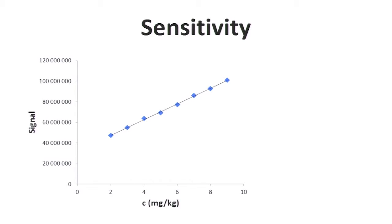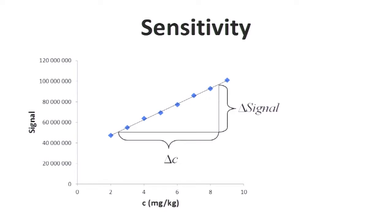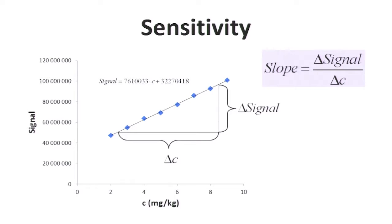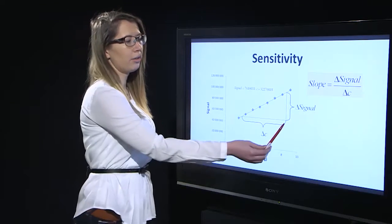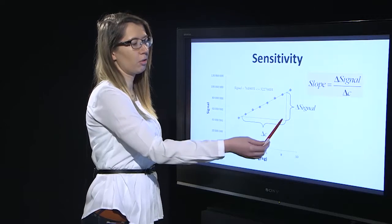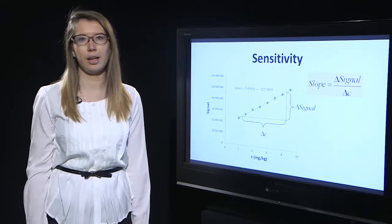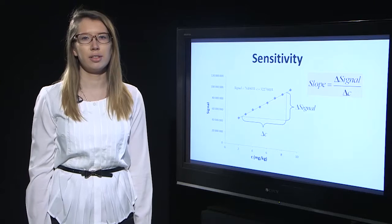On a calibration graph we can find the sensitivity according to its definition, where we find the change in the signal which corresponds to the change in the analyte concentration, and we can express it as the slope of the calibration graph. We can also see the value of sensitivity from the calibration function, and the higher the change in signal corresponding to the same change in analyte concentration, the more sensitive the method is.